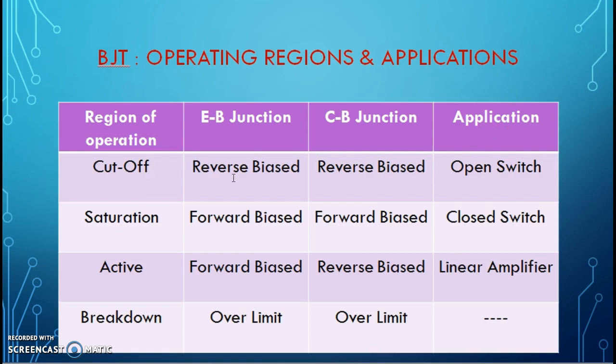Cut-off region is when both the junctions are reverse biased, so it will act as open switch. Saturation region means both the junctions are forward biased, so it will carry a large current, so it is operated as closed switch.